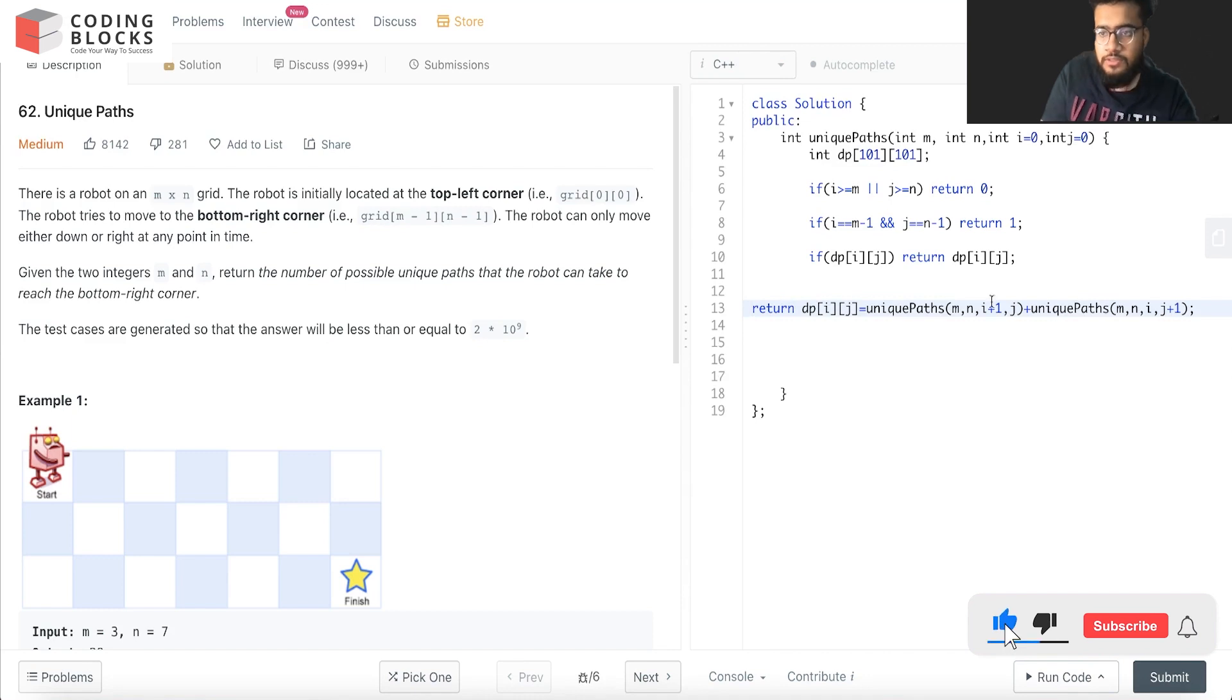This will be our final result. We just took care of the boundary cases, and this case will be because we already reached that position which will return 1 only. And if we already have a path, we have stored the path value. And if it's not the case, we have traversed both sides. So let's try to run this one.